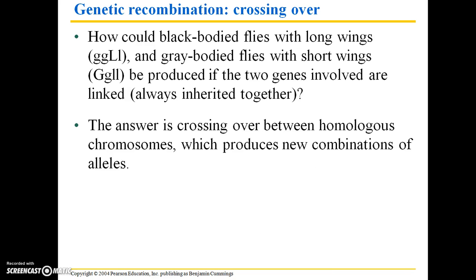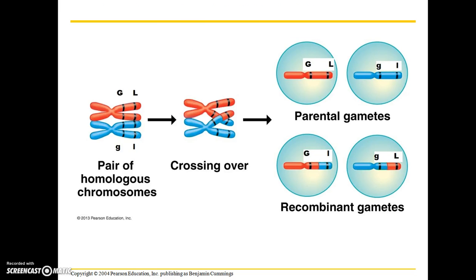The answer is crossing over between homologous chromosomes, which produces new combinations of alleles. During a crossing over event, you have a segment of one homologous chromosome crossing over, and what you end up with is a recombinant gamete. So you're going to have some parental gametes and some gametes that have a mixed combination of alleles.